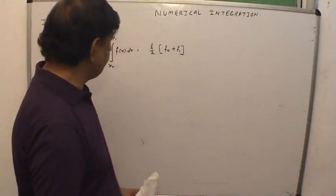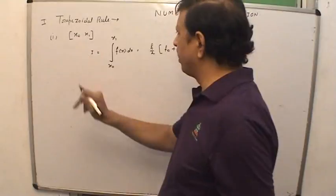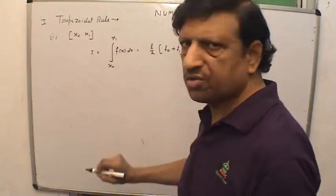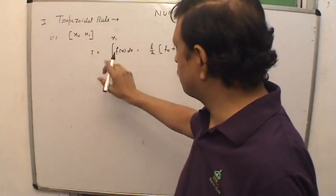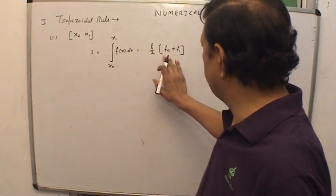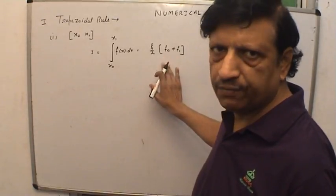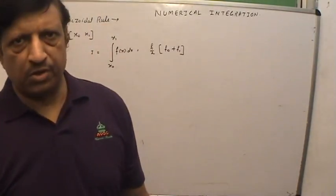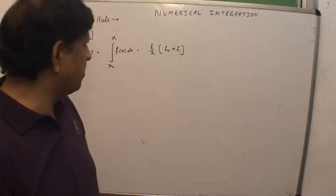This is the simple formula for the trapezoidal rule. When we have only two conjunctive limit points — such as x0 to x1, 1 to 2, 2 to 3, -1 to 0, or 0 to 1 — the formula is h/2 times (f0 plus f1). We will later discuss what f0 and f1 are and how to calculate them.